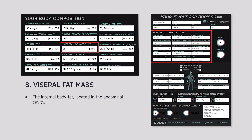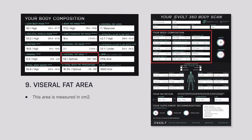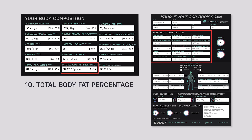Visceral fat is the fat stored around our internal organs. Then we have the visceral fat area, which is measured in centimetres squared. Basically, if we were to take all the visceral fat out from inside and lay it on a piece of paper, it would be that measurement in cm². Again, that's compared to the reference ranges, shown in brackets with an optimal, under, or high.